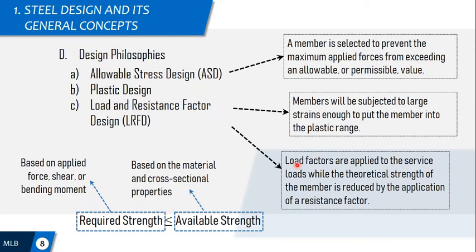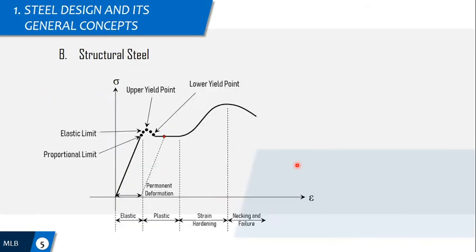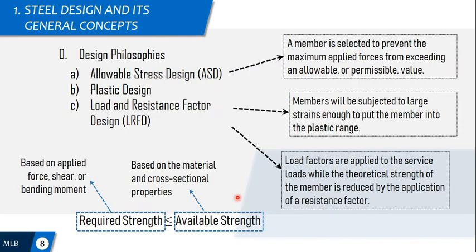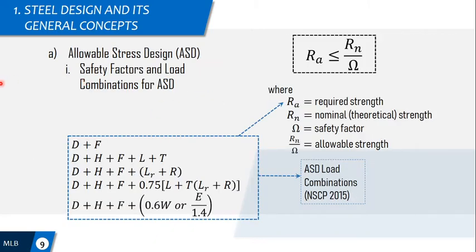Now, in design, the required strength has many factors to consider. We have dead load, live load, and other types of loads according to use or occupancy of a structural member. The available strength or required strength has different ways of determining it based on your design philosophy being used.